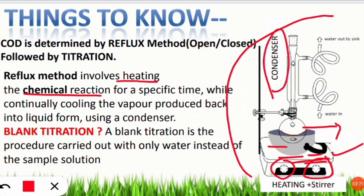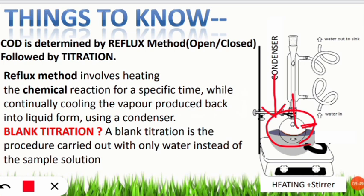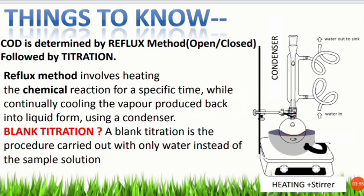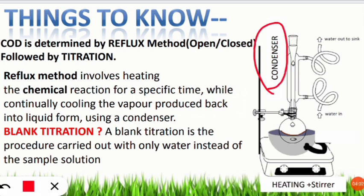The next part is the condenser. In the reflux method, heat is provided to the chemical reaction for a certain amount of time while continually cooling the vapor produced back into liquid using a condenser. If you provide heat to the chemicals, they will evaporate. We need to bring that liquid back inside the flask because we need to analyze those chemicals from the water sample.